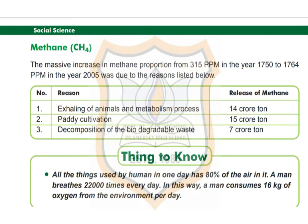The increasing proportion of methane in the atmosphere leads to many environmental changes and global warming. In the year 1750, the proportion of methane was 315 ppm. By the year 2005, this proportion increased to 1764 ppm — a massive increment in the proportion of methane.